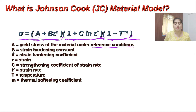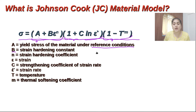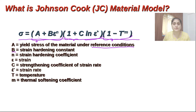What is B? B is showing the strain hardening constant, which I will show using a stress-strain graph. N is the strain hardening coefficient. Epsilon is showing the strain. C is the strengthening coefficient of strain rate. The second bracket is showing the strain rate effect, and epsilon-dot is showing the strain rate. T is the temperature and M is the thermal softening coefficient.